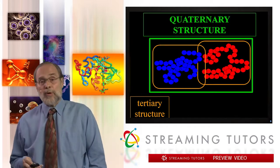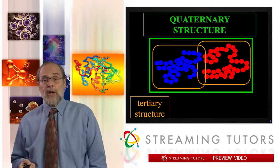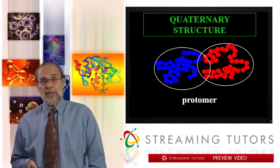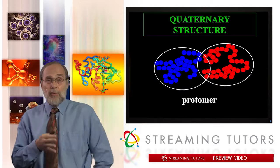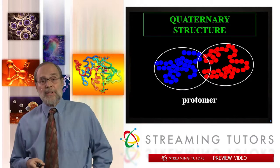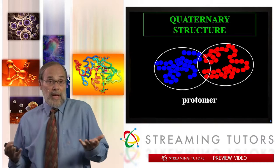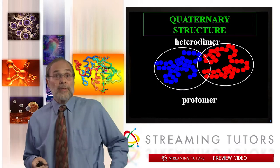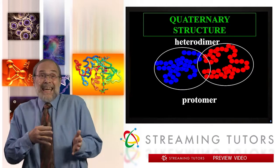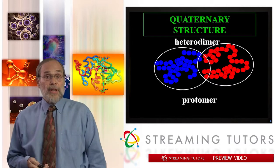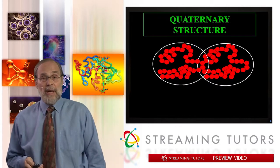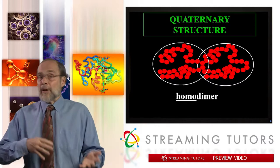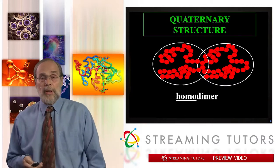Quaternary structure is the association of multiple globular elements associated non-covalently with one another. Let's introduce a couple of pieces of terminology. If you have two proteins associated in this way, each of the proteins is called a protomer, not a monomer. When you put them together, it's a multimer of some sort. This is a dimer, and there are two different types of protomers in this dimer, so it is a heterodimer. Some proteins associate with other copies of themselves — that's called a homodimer — and we can extend this to heterotetramers, heterohexamers, homohexamers, and so on.